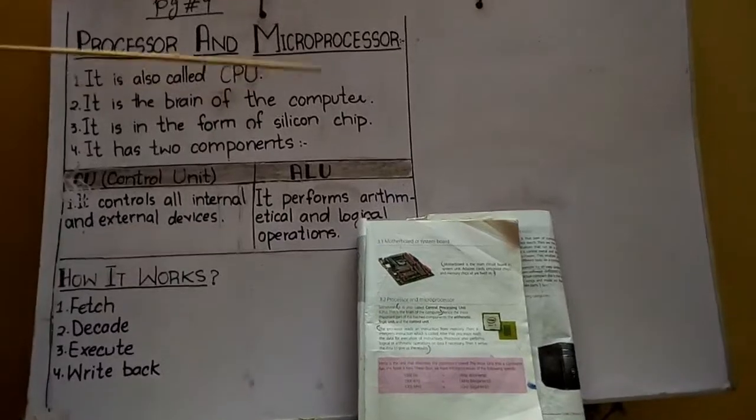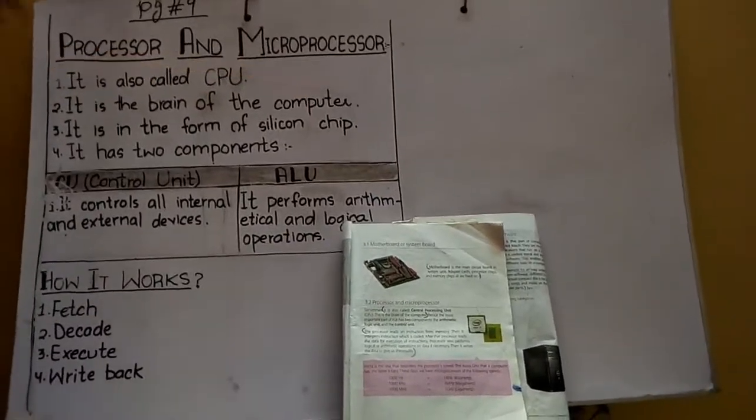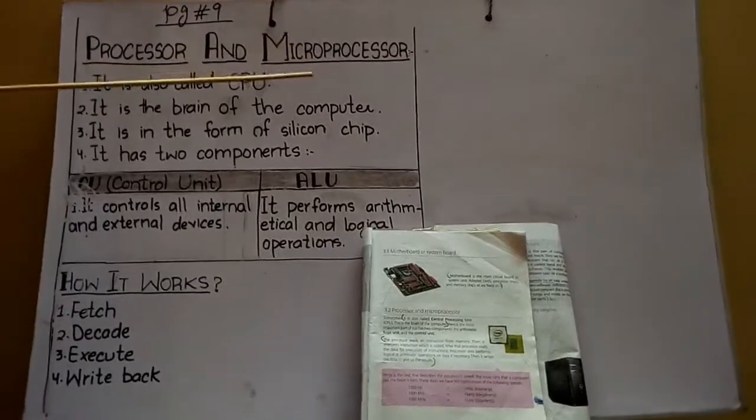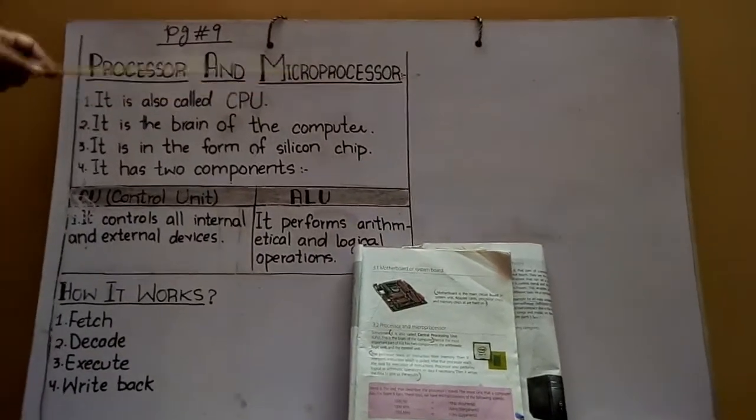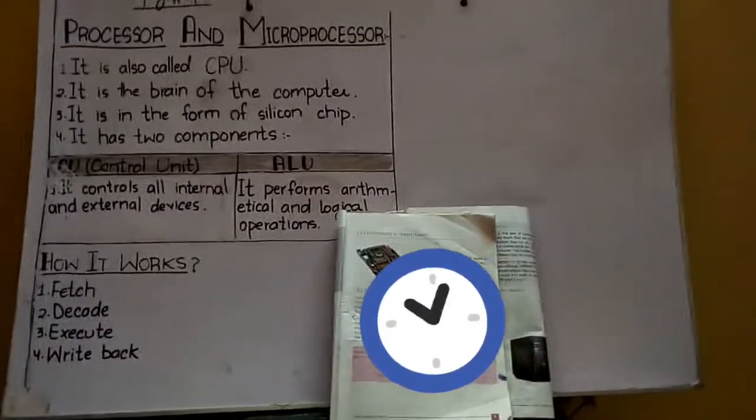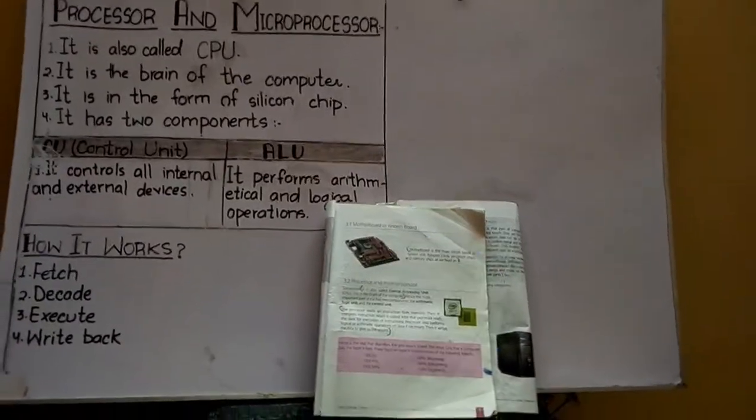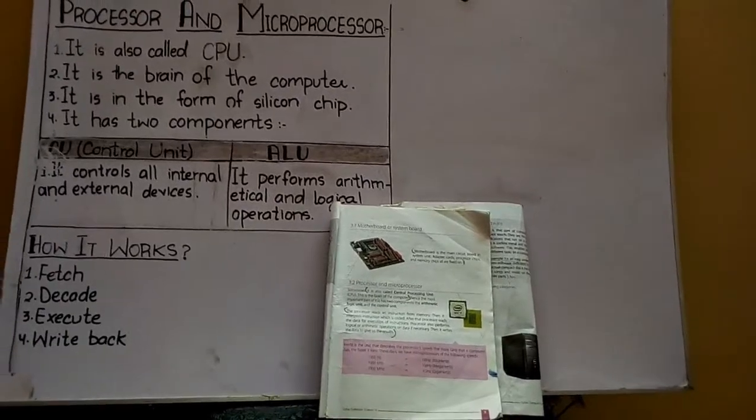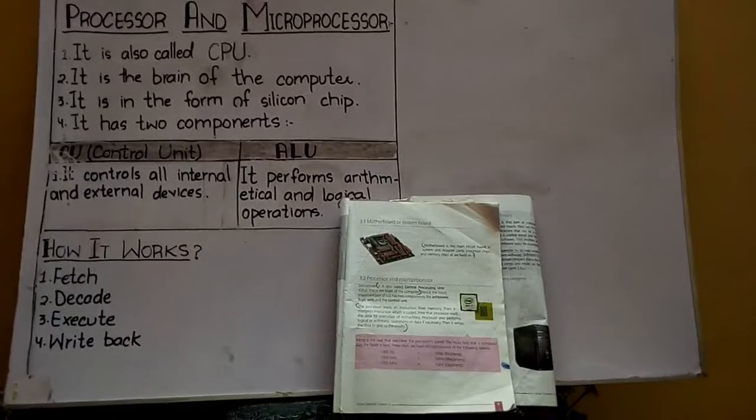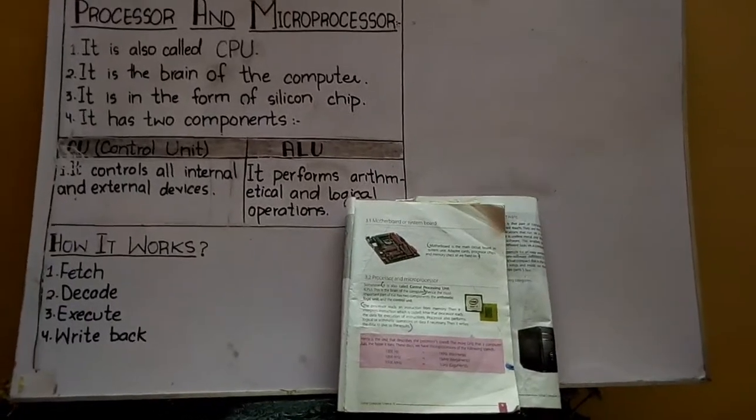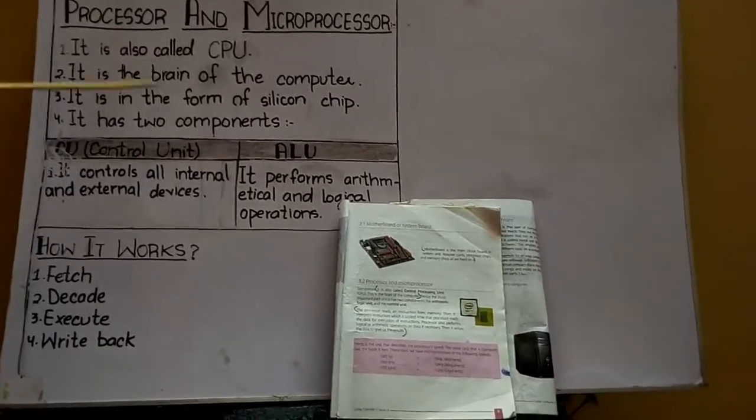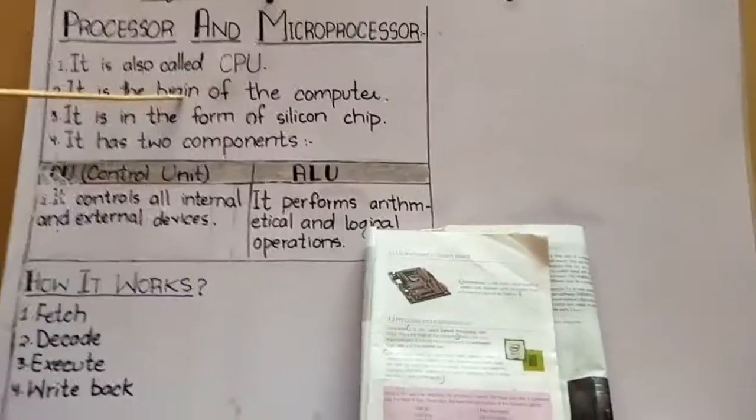While we are saying it is the brain of the computer, students, which work we perform in the computer, where does it perform? In the processor. Suppose you write 5 plus 2 equals 7. Where does it perform? In the processor. You can say it is the brain of the computer.